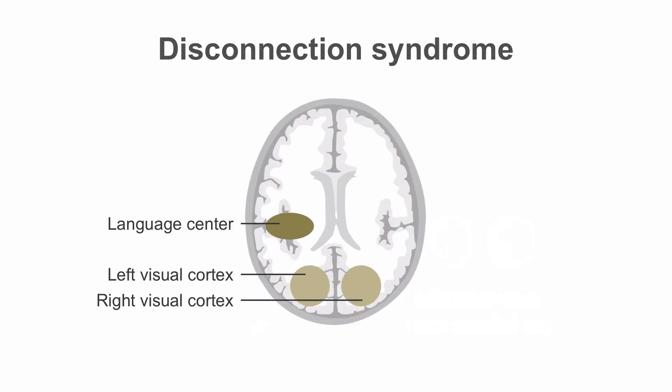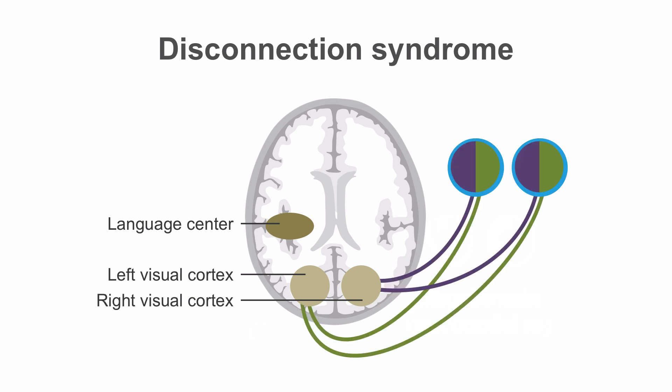As you'll remember from our discussions of the temporal lobes, language processing occurs largely in the temporal lobes of the dominant hemisphere. In a right-handed person, that means when reading, information from the left visual field will be processed by the right visual cortex and would normally be conveyed to the language centers in the left hemisphere by passing through the corpus callosum.